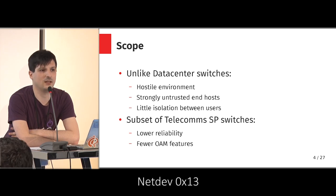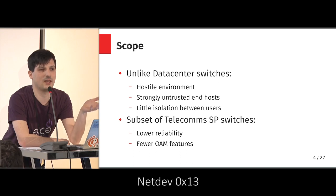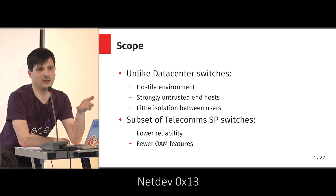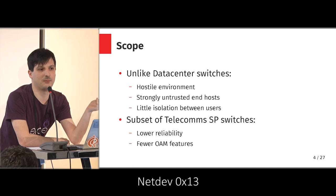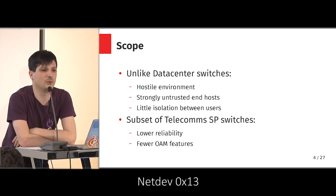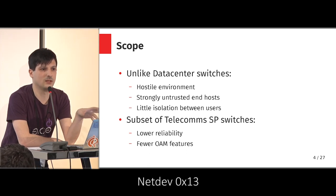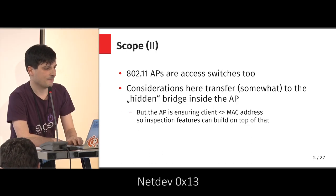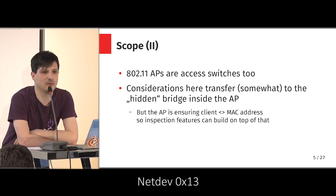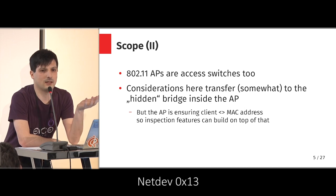In a data center you have a limited set of tenants, and you tend to partition them. The key difference with access switches is the absence of that partitioning — an access switch will in some situations see 10 different devices from 10 different users, each owning their own laptop. Telecom service provider switches tend to have way more management features in terms of connectivity, fault management, OEM, and so on. An access point is also a switch in that it contains bridging logic, and some of these considerations apply to Wi-Fi access point interfaces as well.